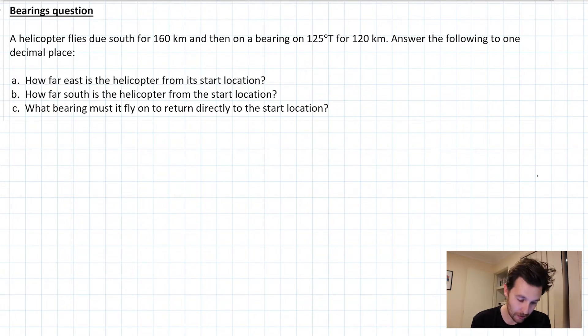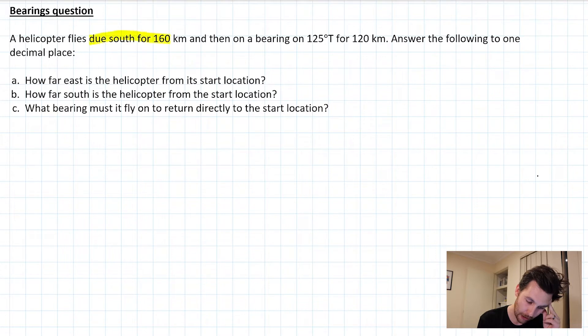So first thing I'm going to do is read out the question. A helicopter flies due south for 160 km and then on a bearing of 125° for 120 km. The actual questions are: how far east is the helicopter from the start location? How far south is the helicopter from the start location? And what bearing must it fly on to return directly to the start location?